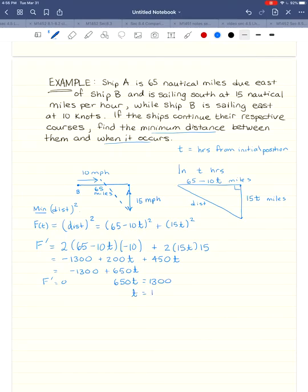And so my first derivative is negative 1300 plus 650T. Set that equal to zero. So I move the 1300 over. Divide by 650. I believe that's a nice even two.